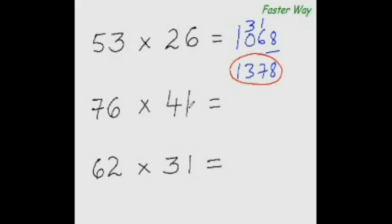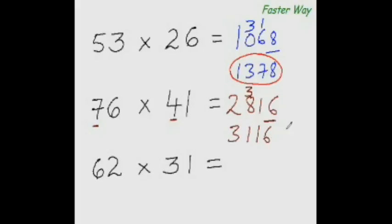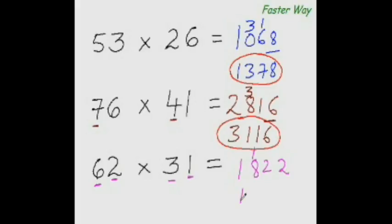Now you try this one. Multiplying the first digit of this number with the first digit of this number: 7 times 4 is 28. Multiplying this first digit again with the second digit: 7 times 1 is 7, and adding the product of 4 and 6 — 7 plus 24 is 31. The last digit: 6 times 1 is 6. So 28 plus 3 is 31, and the answer is 3116. Once again: 6 times 3 is 18; 6 times 1 is 6, plus 3 times 2 is 6 — 6 plus 6 is 12; and 2 times 1 is 2. So the answer is 1922.